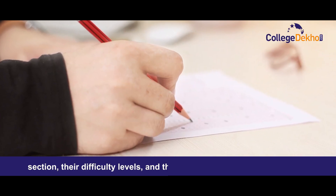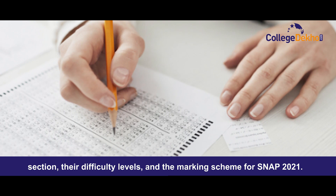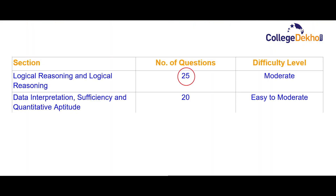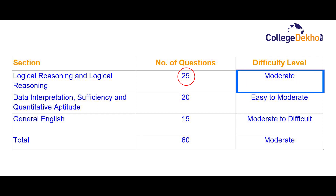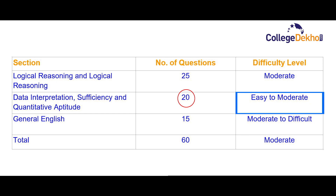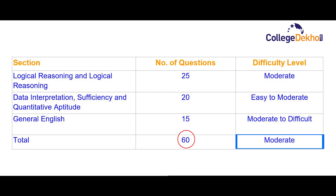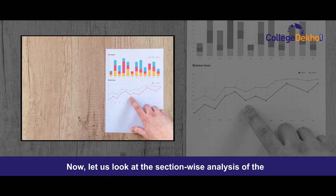Here we will discuss the section-wise analysis with the number of questions in each section, their difficulty levels, and the marking scheme. As you can see in the table displayed below, 25 questions were asked from Logical Reasoning at a moderate difficulty level. 20 questions were asked from Data Interpretation, Sufficiency, and Quantitative Aptitude at an easy to moderate level. 15 questions were asked from General English at a moderate to difficult level. The overall difficulty of Slot 2 was found to be moderate.